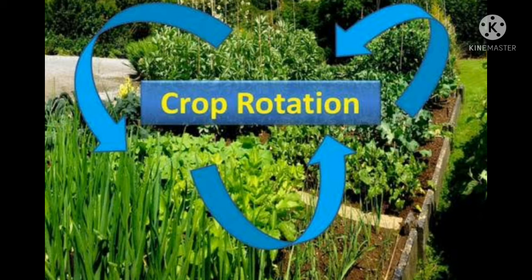The second technique is crop rotation. Two or more crops are grown in the same soil alternatively, so that the soil is not deprived of any particular nutrient. Leguminous crops such as pulses and beans are sown in one season, and cereal crops such as wheat and maize are sown in the next season on the same field — this is the example of crop rotation.